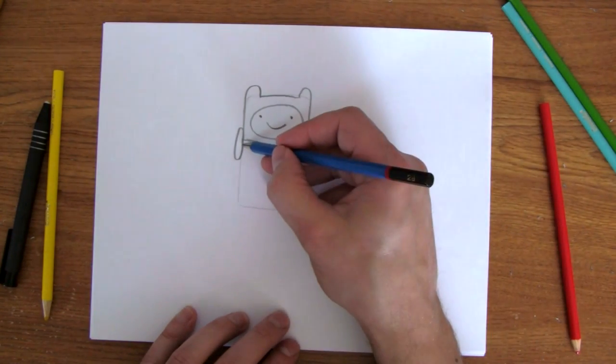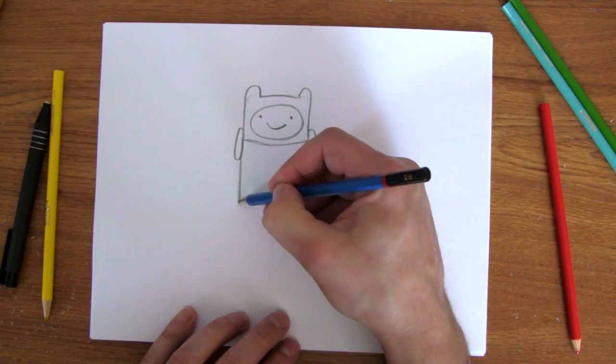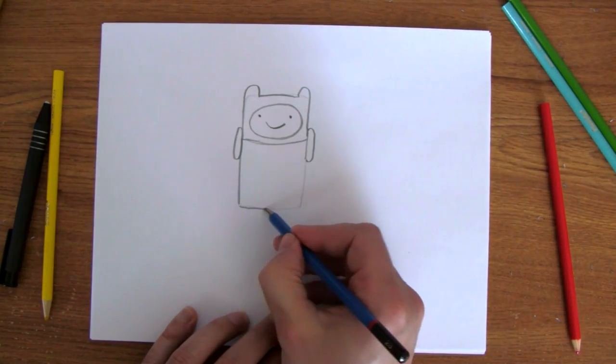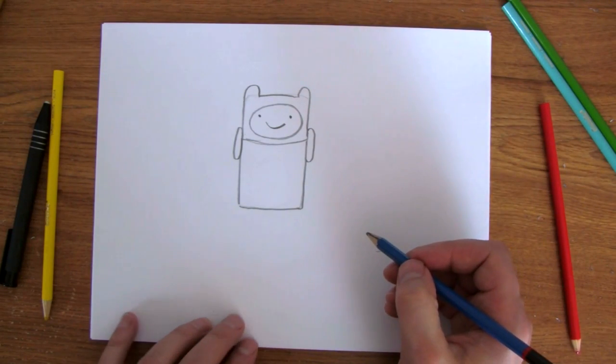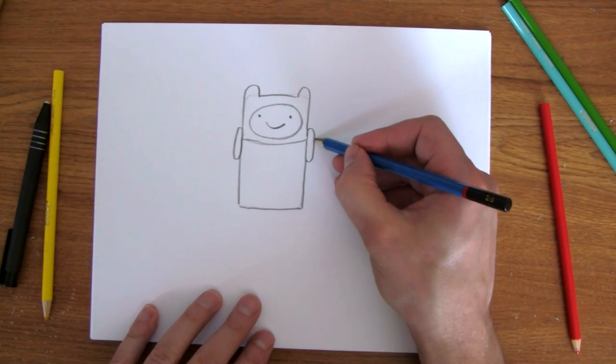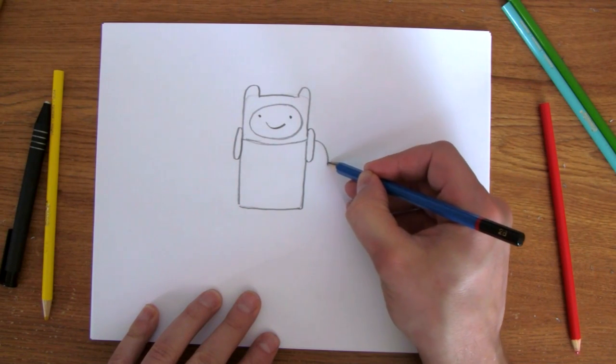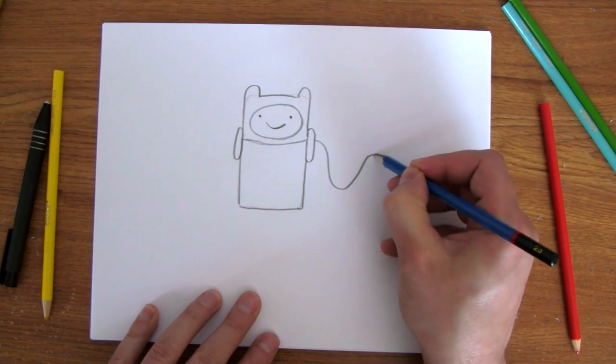And this is his shirt. And his arms. Kind of just snake-like arms.